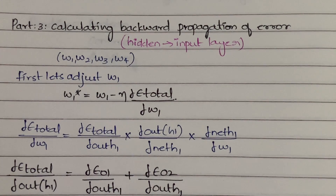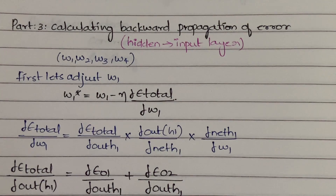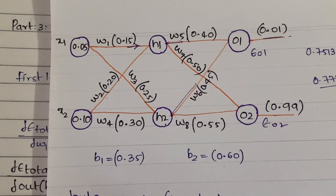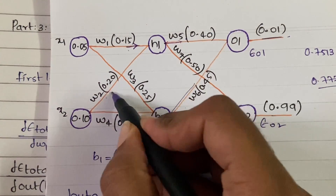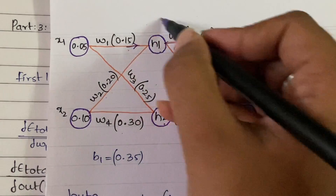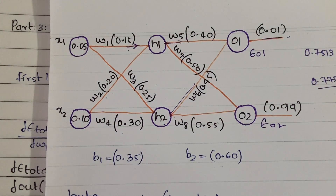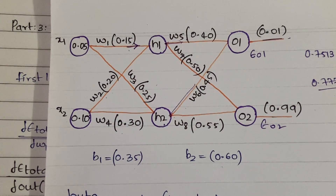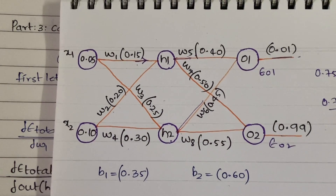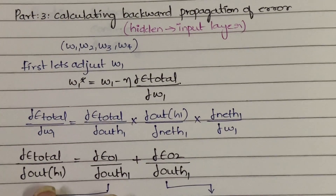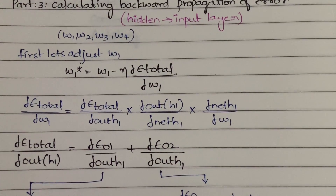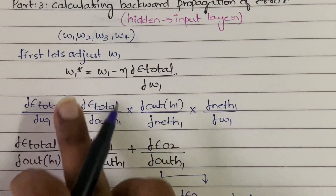While moving from the output layer to the hidden layer we have four weights: w5, w6, w7, and w8. Now when we move from the hidden layer to the input layer, we again have four weights: w1, w2, w3, and w4. These four weights we have to modify — that is the task for this video. I am going to explain how to modify w1, and from that you apply the same process to w2, w3, and w4.